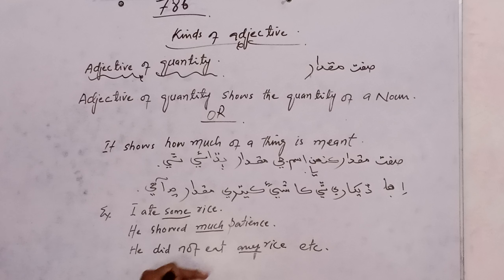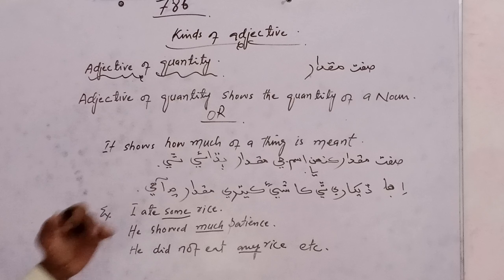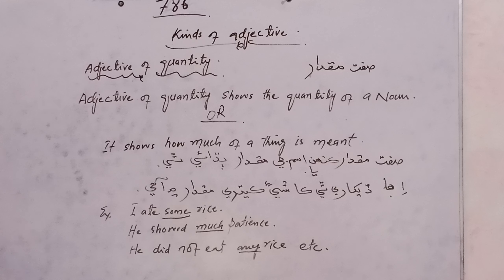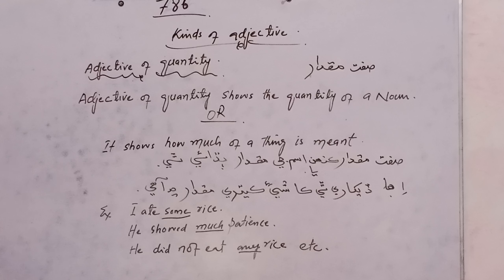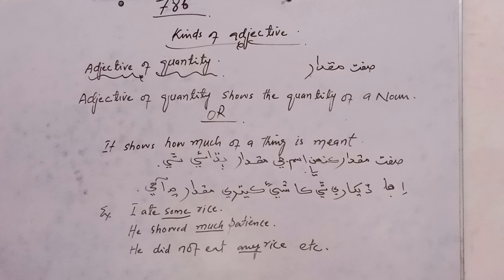Another example: 'He did not eat any rice.' Inna ko bi chaamaro na khaatog — meaning he did not eat any quantity of rice at all. This shows that the adjective of quantity can also express zero or no quantity.